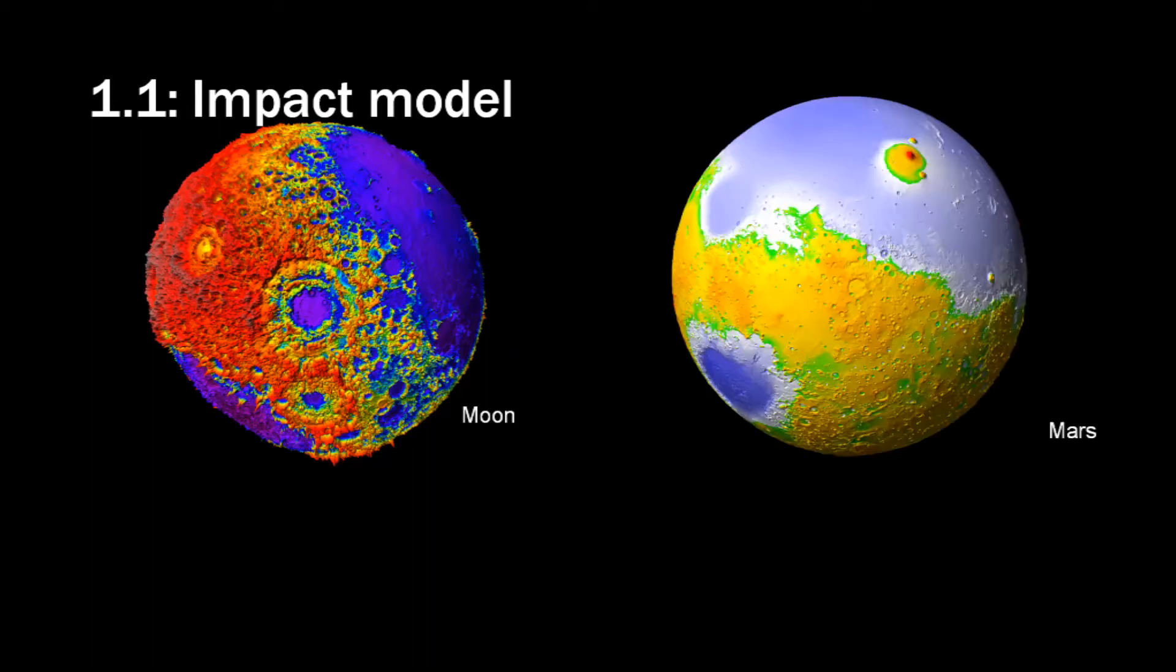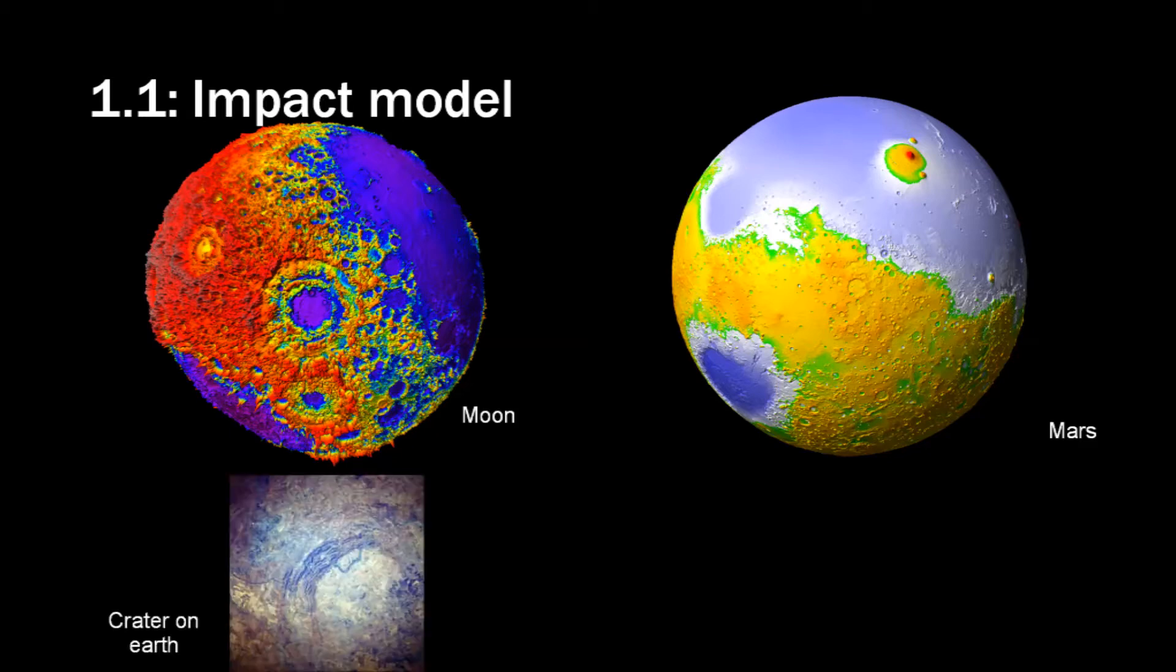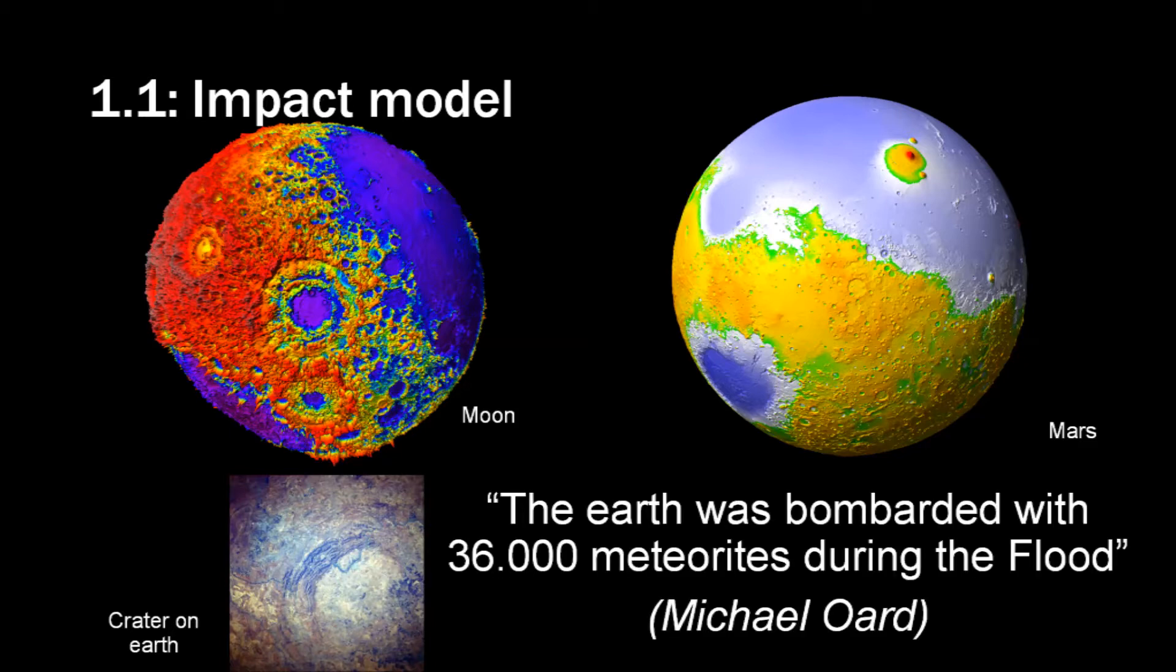First the impact model. Take a look at the moon or at Mars, these are two height maps for example, and you'll notice a lot of craters. And even on Earth we find craters. Michael Ord says that if we extrapolate from the moon how many craters there should be on Earth, he says there should be 36,000 of them on Earth with a diameter of 30 km or larger. That's because there are more than thousands of those on the moon and the impact chance of the Earth is 19 times larger.